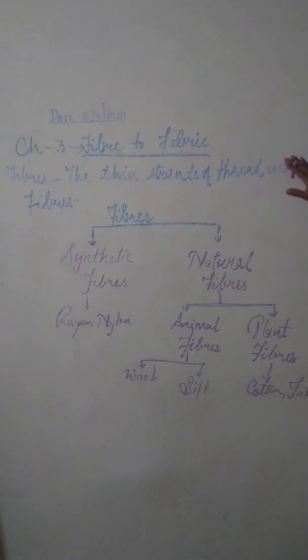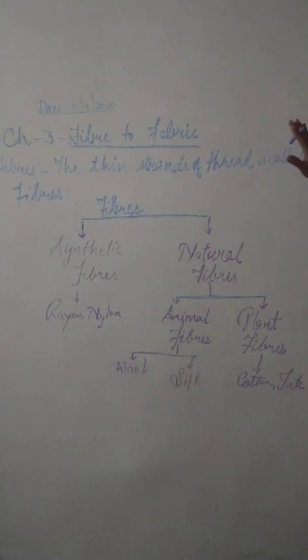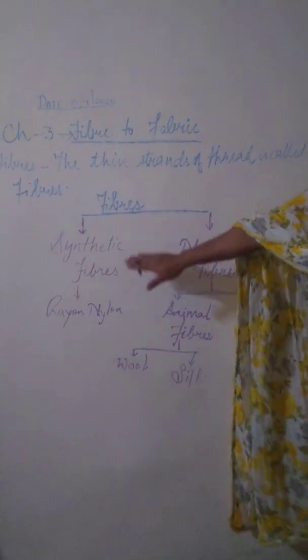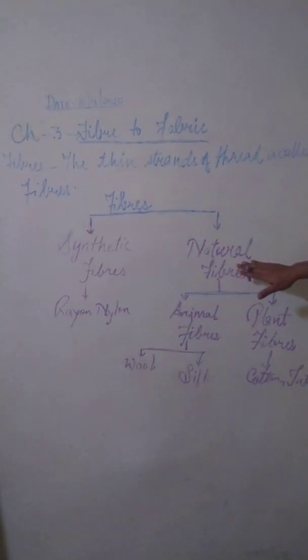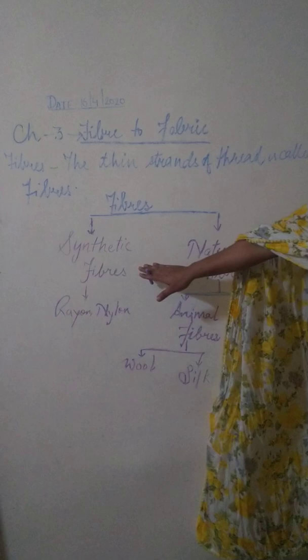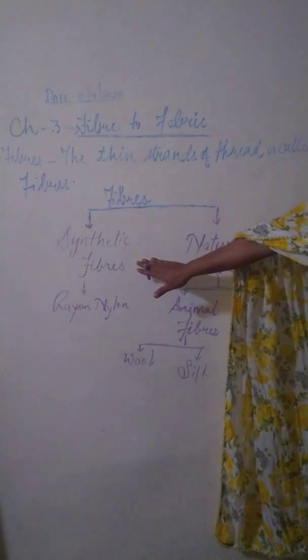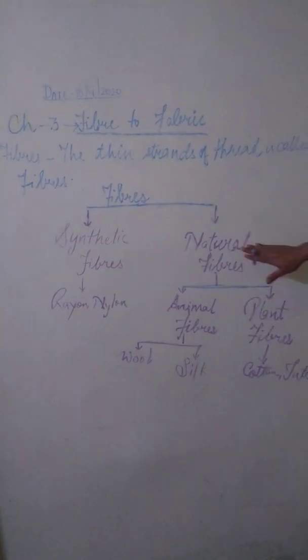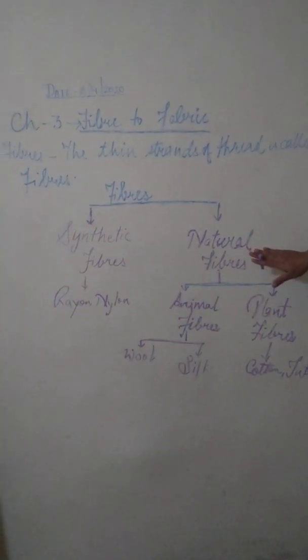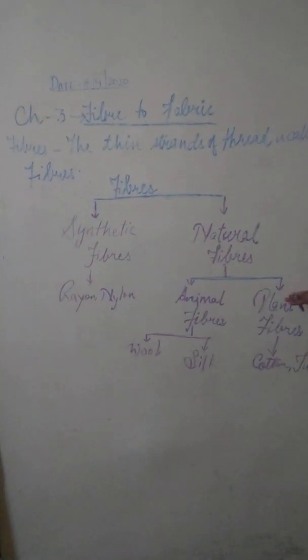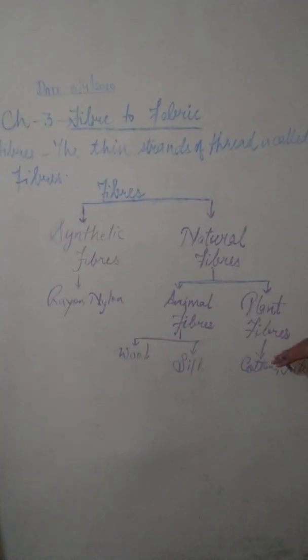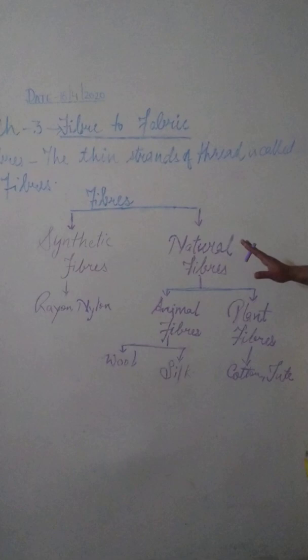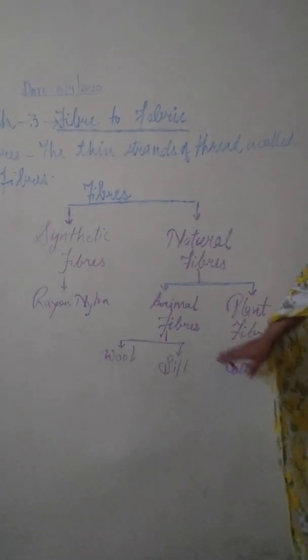We have already learned in class 6 about fibers. Where does it come from? We have to get a summary first of what we learned in class 6. In class 6, we learned fiber out of two types: synthetic fiber, natural fiber. Synthetic fiber is prepared in laboratories, example rayon, nylon, acrylic. Whereas natural fibers, we get it naturally from plants and animals. Plant fibers such as cotton and jute, which we have already learned in class 6, how do we get fibers from jute and cotton.